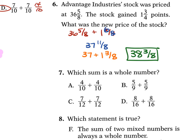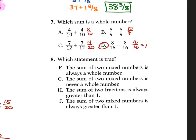Problem 7 asks which sum is a whole number. A is 8 over 10 — no. C is 14 over 20 — no. B is 10 over 9 — no. D is 16 over 16, which equals 1 — yes, that is a whole number. Problem 8 asks which statement is true. F says the sum of two mixed numbers is always a whole number — false. G says it's never a whole number — false. H says the sum of two fractions is always greater than 1 — false. J says the sum of two mixed numbers is always greater than 1 — that is correct.